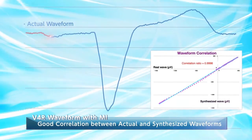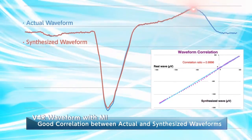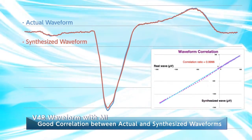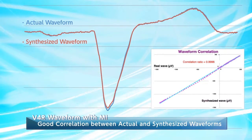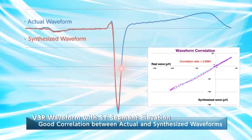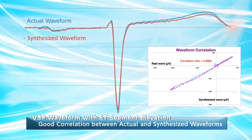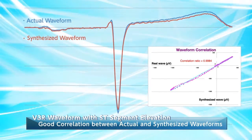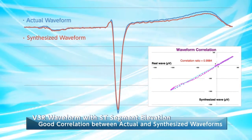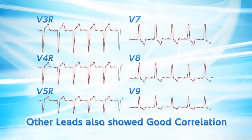Here is an actual V4R waveform with right ventricular infarction. There is almost no difference between the actual and the synthesized waveforms. This is an actual ECG waveform with observed ST-segment elevation. If we overlay the synthesized waveform, we see that, while not a perfect match, the synthesized and actual waveforms are very similar. Other leads also showed good correlation.